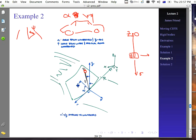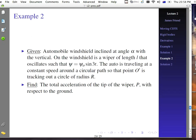So what we're going to do is we're going to attach O'R, phi, z attached to the windscreen. And then we're going to look at what happens to the windscreen. So we've got an automobile windshield inclined at angle alpha with the vertical. On the windshield is a wiper of length L that oscillates such that psi is psi naught, or it's just some constant, sine 3t. The auto is traveling at a constant speed around the circular path. It's just going around a current turn.